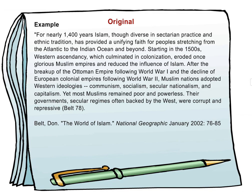For nearly 1,400 years, Islam, though diverse in sectarian practice and ethnic tradition, has provided a unifying faith for peoples stretching from the Atlantic to the Indian Ocean and beyond. Starting in the 1500s, Western ascendancy, which culminated in colonization, eroded once glorious Muslim empires and reduced the influence of Islam. After the breakup of the Ottoman Empire following World War I and the decline of the European colonial empires following World War II, Muslim nations adopted Western ideologies — communism, socialism, secular nationalism, and capitalism. Yet most Muslims remain poor and powerless. Their governments, secular regimes often backed by the West, were corrupt and repressive.